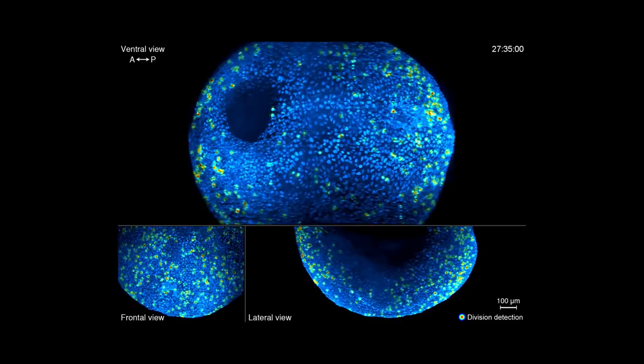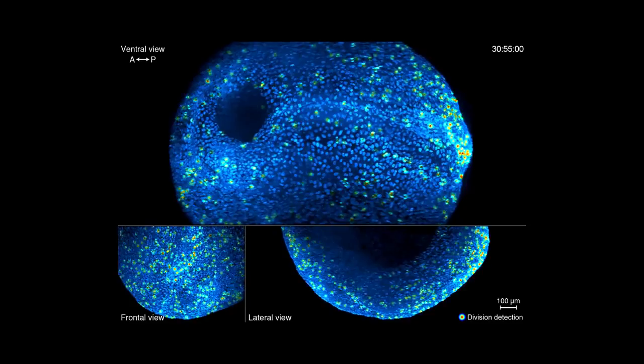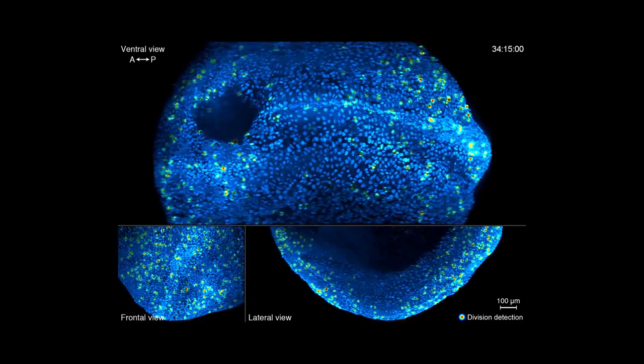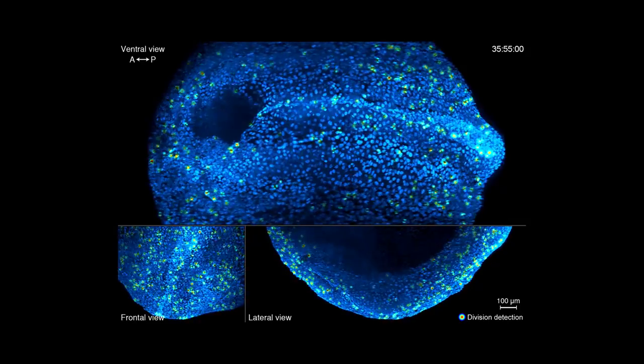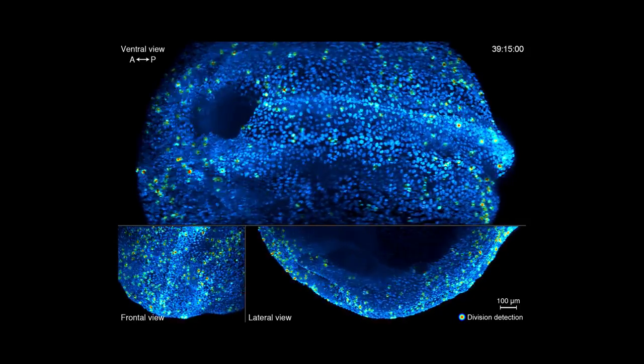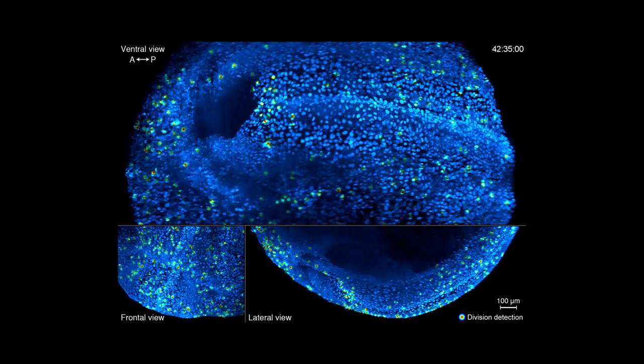In order to analyze and quantify these developmental processes and make comparisons between embryos, we developed a computational framework to handle the large and complex image data generated by the light sheet microscope, including a machine learning framework that uses a convolutional neural network to automatically detect cell divisions in the 4D image data.